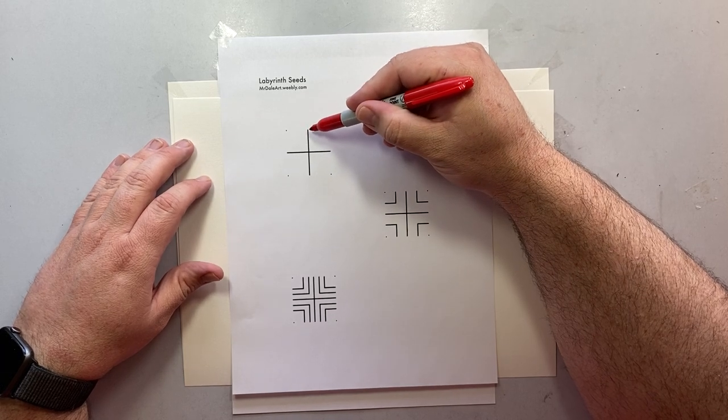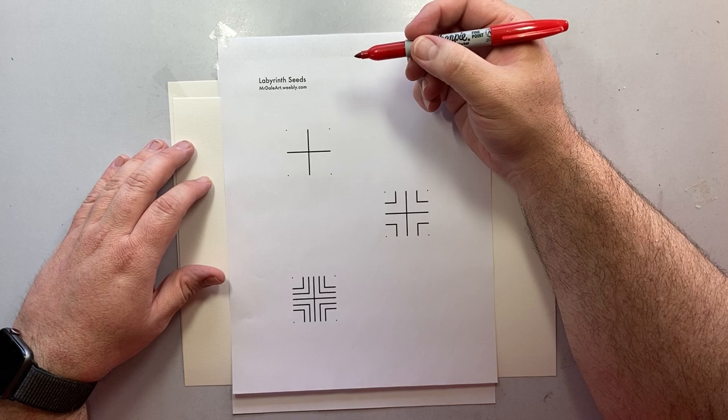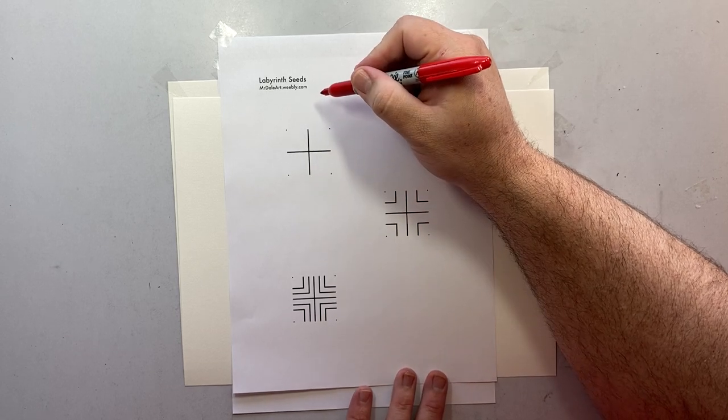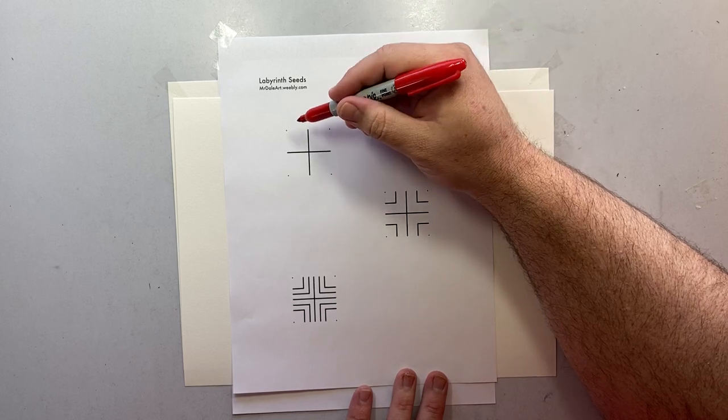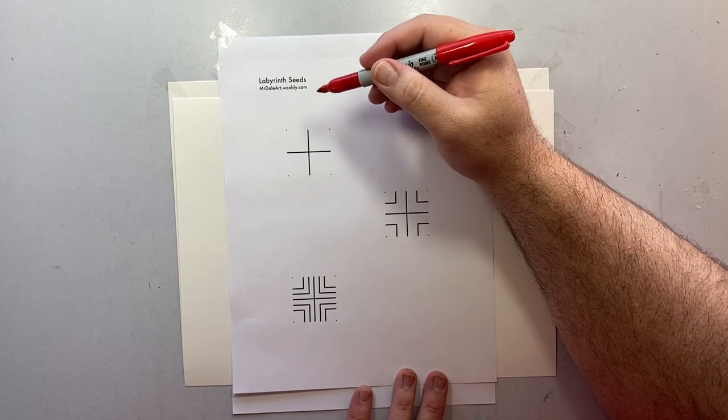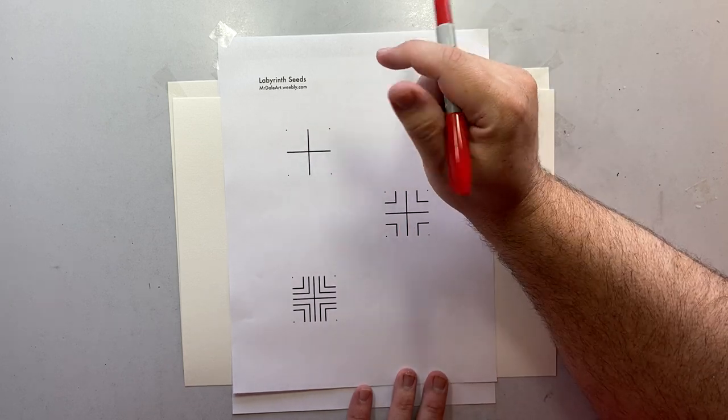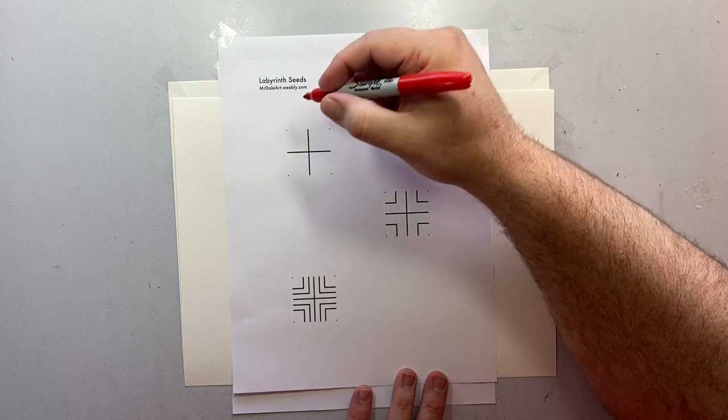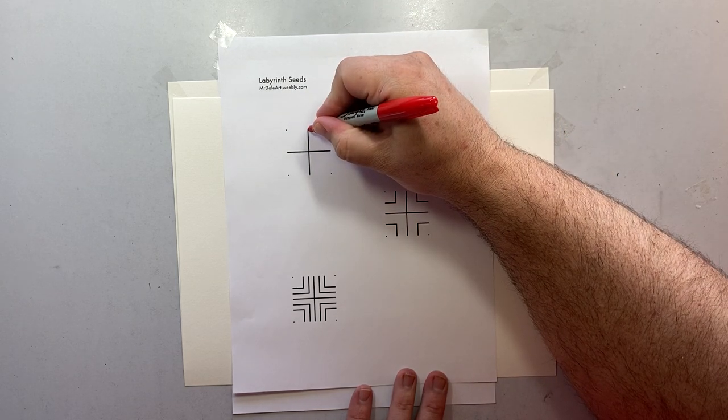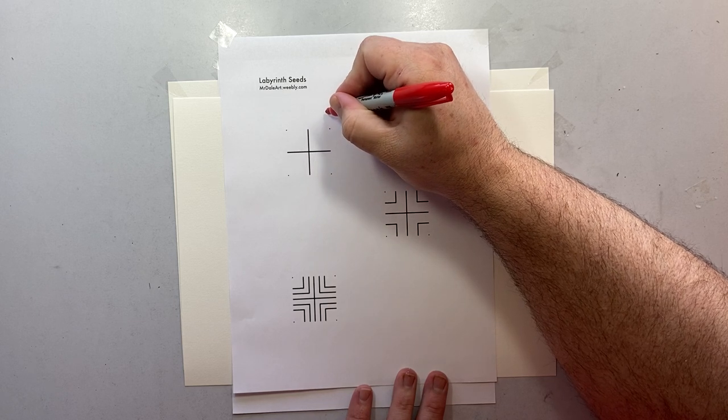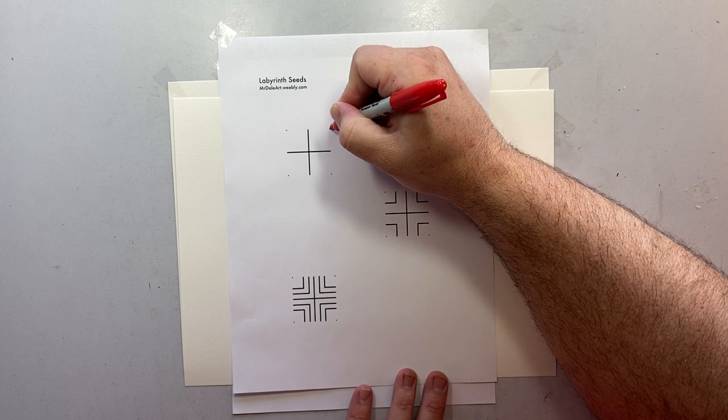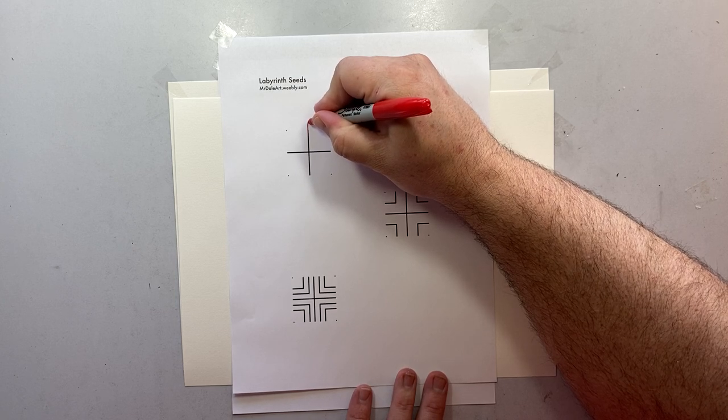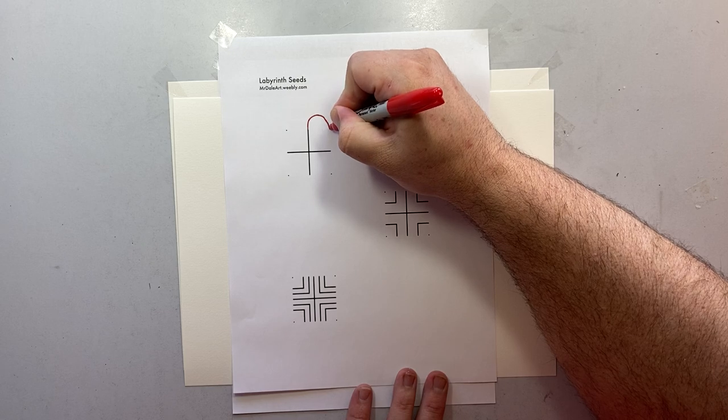You're going to need the labyrinth seed worksheet, a pencil, a piece of paper. Now I'm using a marker today so that you can see my lines. In fact, I think I'm going to switch to a bright color so that you can see the difference between my lines and the labyrinth seed. So let's start with the simplest one. We always start at the top center. I start in the top center, up, over and connect to the dot.